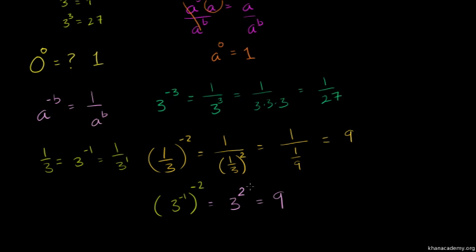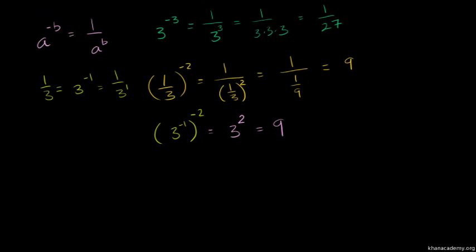We can also show that one third equals 3 to the negative one. If we replace one third with 3 to the negative one, then raise it to negative 2, the exponents multiply to get 3 to the positive 2, which equals 9.